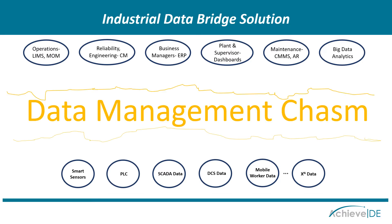What exists between the two of them typically is what we call the data management chasm. Basically, as applications are developed at the high level — for example, taking a business system, ERP system, or MES system and interfacing it to real-time plant floor data — you can certainly connect them via a single interface, single point solution. But as things change at the plant floor level, like a tag might change, a data value might change, or maybe a new machine is added to the system, it can break the connection.